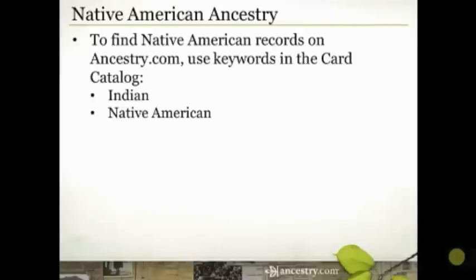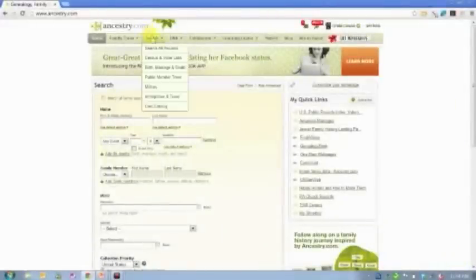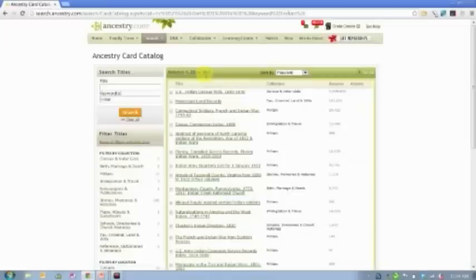There are other records available on Ancestry.com for Native American research. You can use the card catalog and use the keywords 'Indian' and 'Native American' to pull up all of those databases. You'll find the card catalog by hovering over Search and clicking on Card Catalog, which is the bottom option. Here is that keyword field — if I type in 'Indian' and click Search, you'll see we have 161 databases that contain the word 'Indian' somewhere in the title or database description.